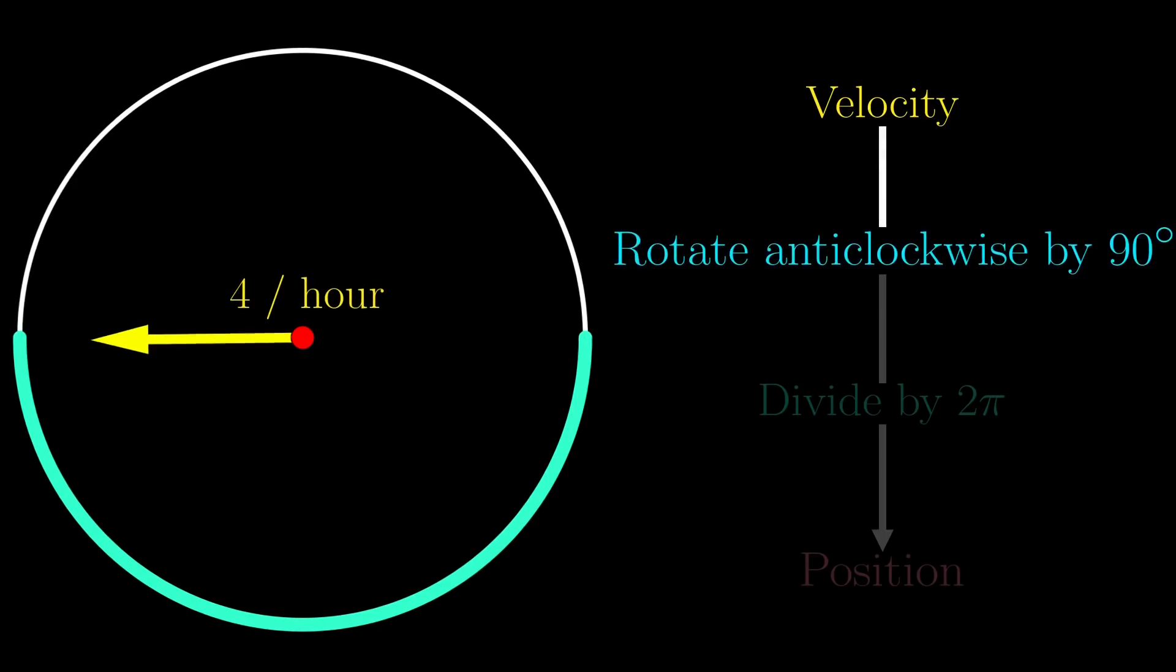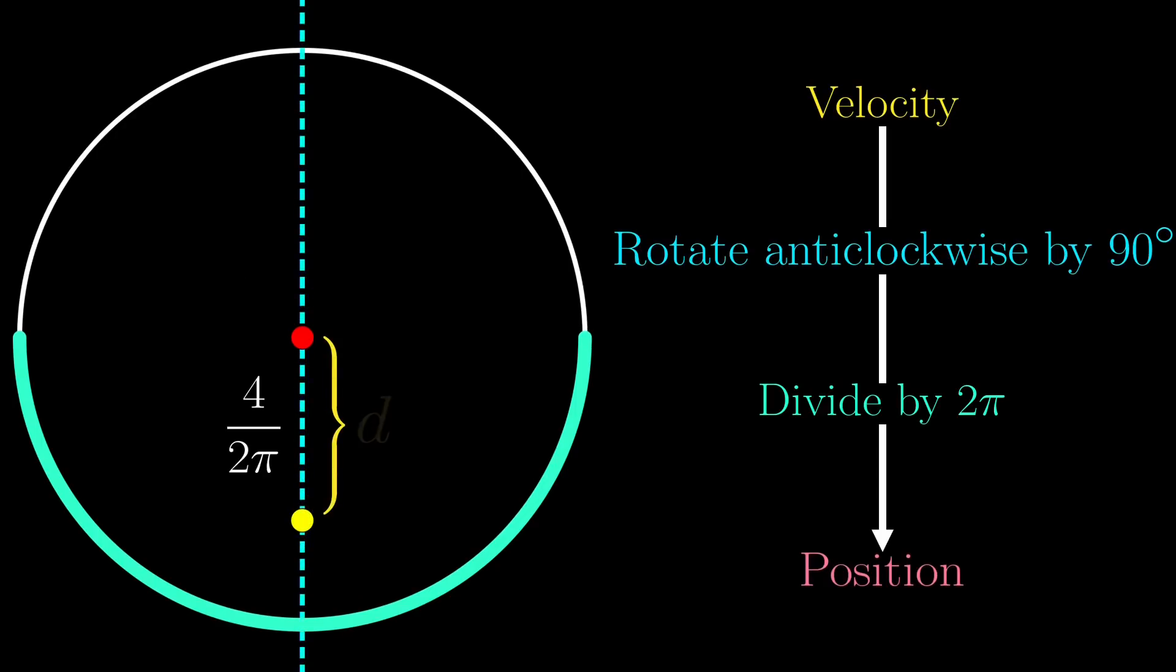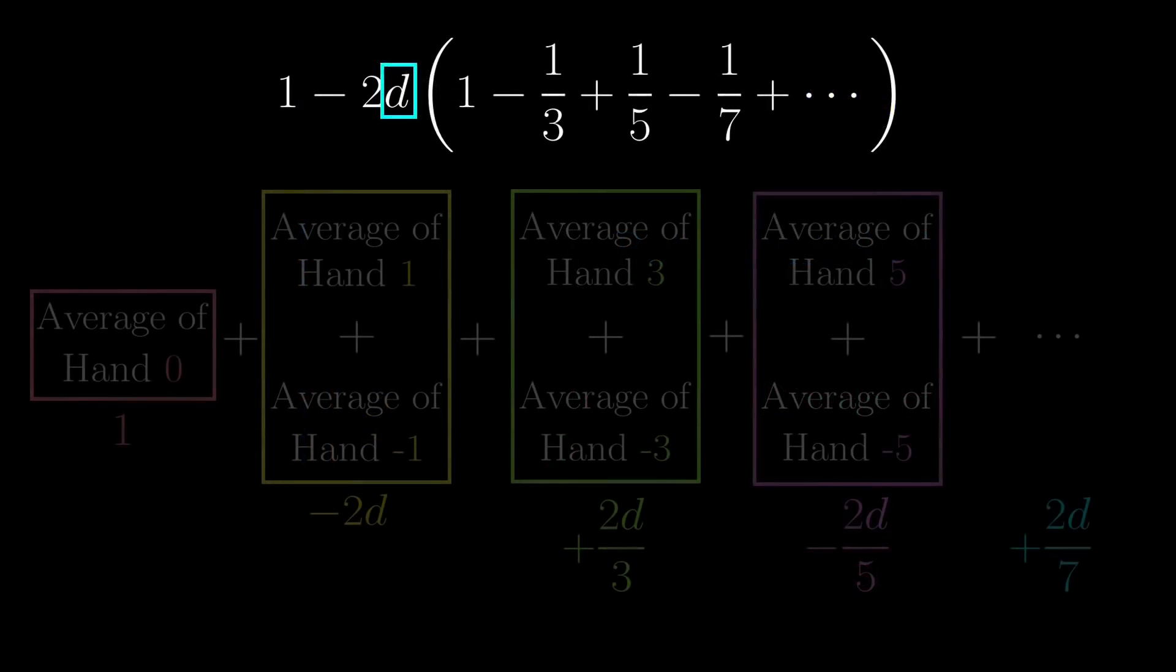The tip has displaced 2 units to the left, doing so in half an hour, which means that the average velocity is 4 units per hour to the left. Next, we need to rotate this average velocity vector anticlockwise by a right angle, then divide by 2pi, which in this case, is 4 divided by 2pi units downwards, or in other words, the d that we are looking for is 2 over pi. So we plug this value of d back into our sum, in this case, 2d is 4 over pi, and we finally have this complete sum.